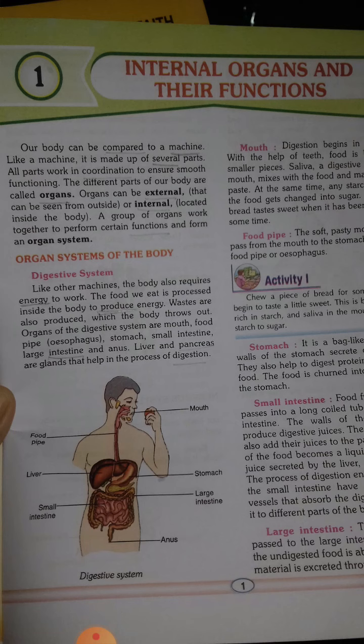In our body also, there are parts. Let us find out what they are and how they function. The different parts of our body are called organs. For a machine we say parts; for our body we say organs. Organs can be external — those that can be seen from outside, like the tongue, eyes, and nose.